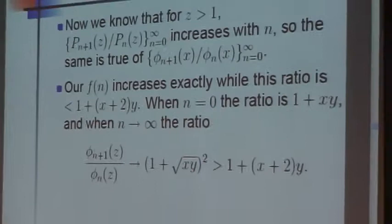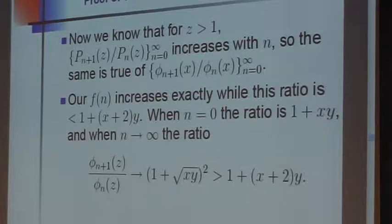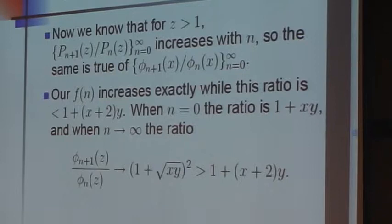When n is 0 the ratio is 1 plus xy. When n goes to infinity the ratio approaches 1 plus square root of xy squared, which is bigger than 1 plus x plus 2y. And it's this thing on the right.